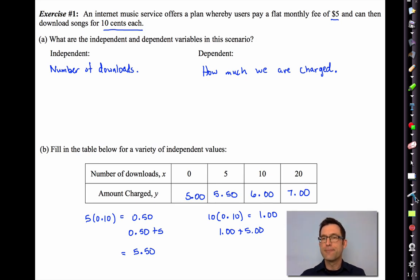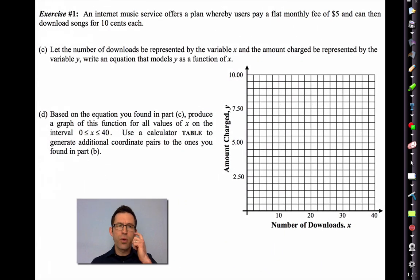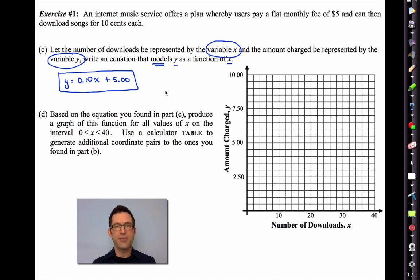Pause the video now, and then we'll clear out the text. All right. We're going to continue to work on this. Letter C says, let the number of downloads be represented by the variable x and the amount charged be represented by the variable y. Write an equation that models y as a function of x. So we can do mathematical modeling in many different ways, but here we like that formula. So think about that for a little bit and look back at B if you need help. In B, we kept taking 10 cents and multiplying it by the number of songs that we downloaded. But then we kept having to add that to $5 to get our total cost. So there's our equation. Y equals 0.10 times x plus 5.